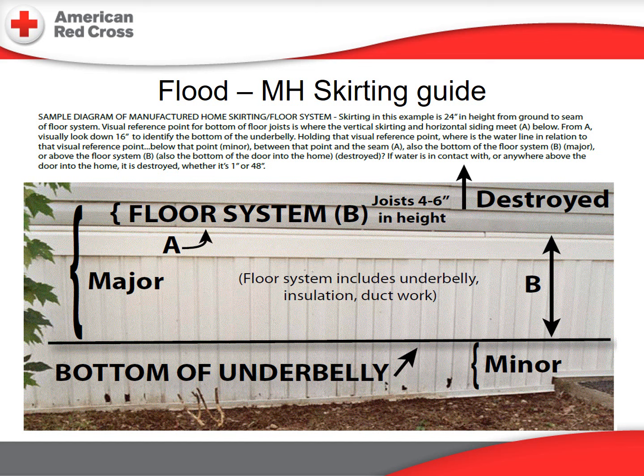From point A, measure down 16 inches — any water level impacting the skirting below that point is considered minor damage. The seam at point A is approximately four to six inches below the actual floor of the home. Measure up six inches from point A to determine where the destroyed classification begins. Major is any water level between those two points — above the minor line but still below the actual floor level.